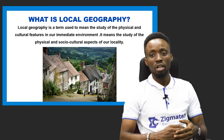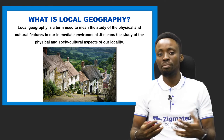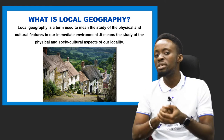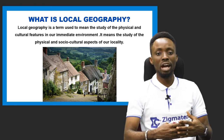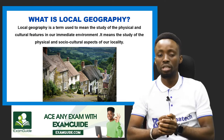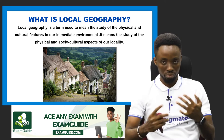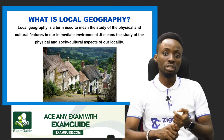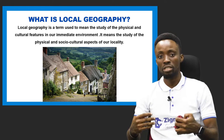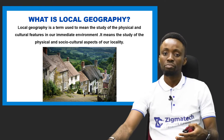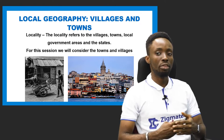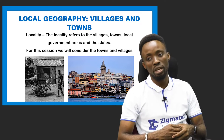So, what is local geography? Local geography is a term we use to mean the study of the physical and cultural features of our immediate environment. In local geography, we study the physical structure, the landscape, the man-made structures around us — anything we can see in our immediate environment. When we say locality, we are talking about our villages, our towns, our local government areas, and our states.